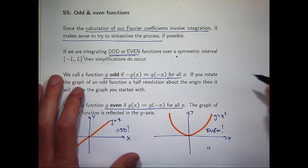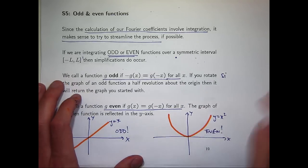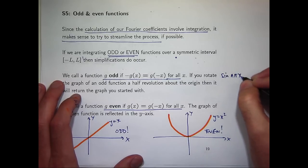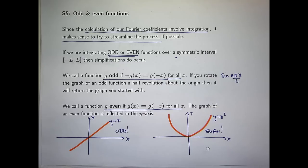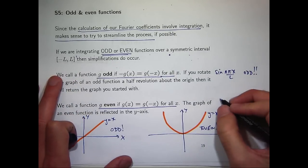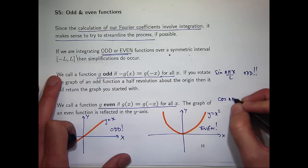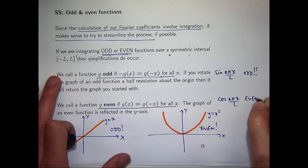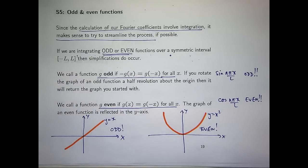Some common functions we'll deal with: sine nπx over L, or just the sine function, is an odd function. Take the sine curve and rotate it 180 degrees — it gives you back the original function. And cosine — the cosine function is an even function. These are going to be very important for our integration and simplification of Fourier series calculations.